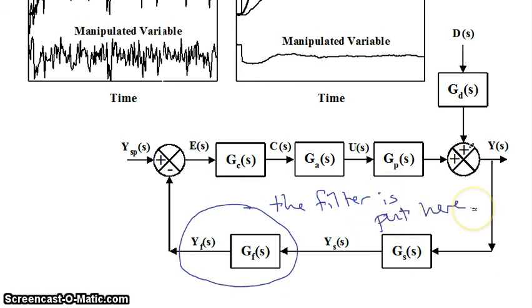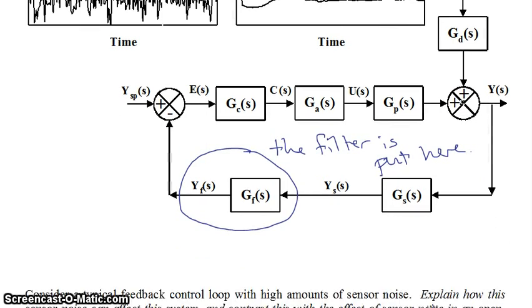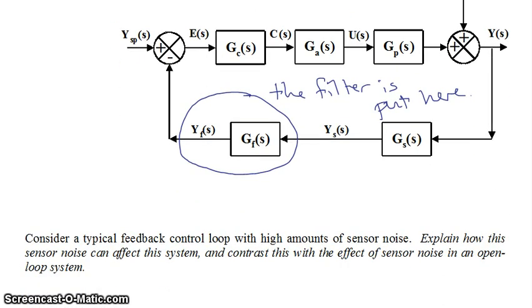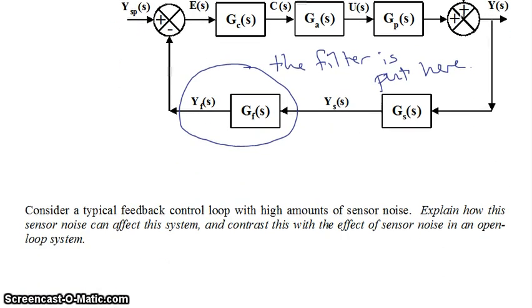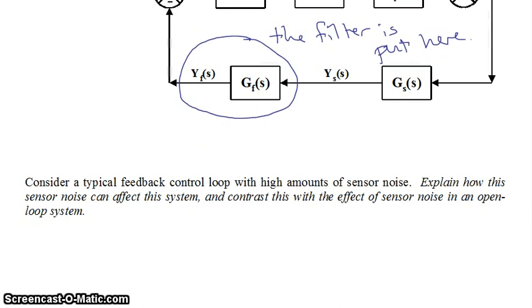Now, if you consider a typical feedback loop with high amounts of sensor noise, we're going to explain how this sensor noise can affect this system and contrast this with the effect of the sensor noise in an open loop system.